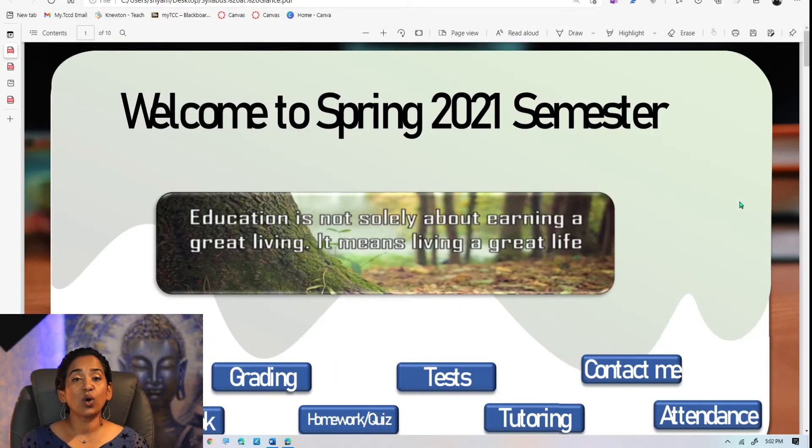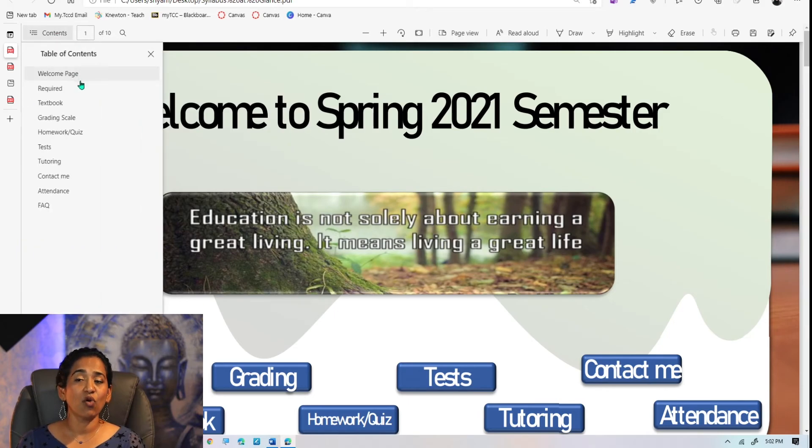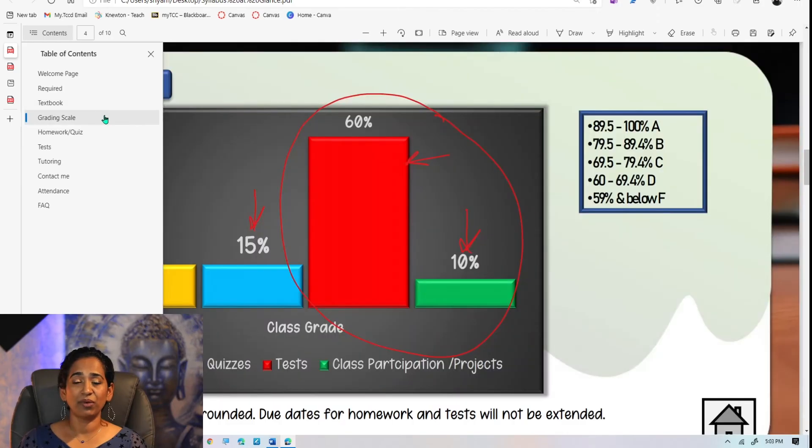So the main reason why I use my Edge browser is the flexibility of me having to read aloud, draw, highlight, comment, erase, and page view table of contents. Let's take a look here. I have all my pages here. If my students want to go directly to grading scale, they can do that by interactive PDF here or simply by clicking the grading scale.